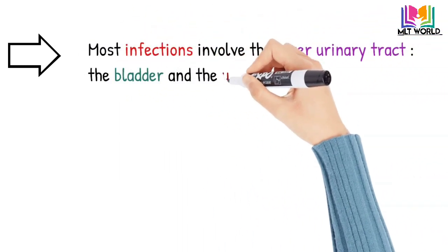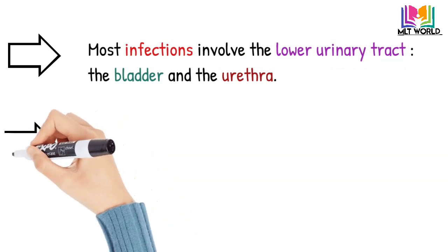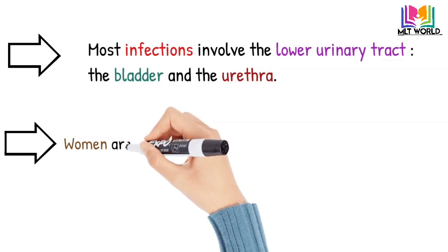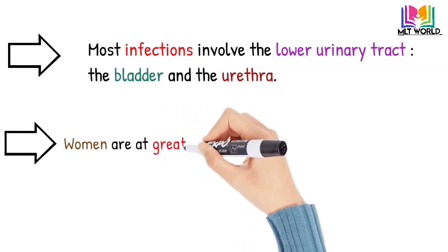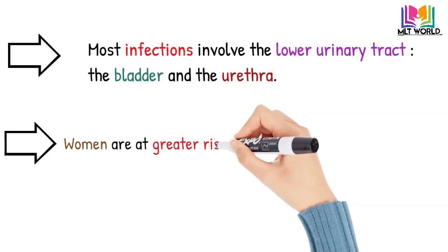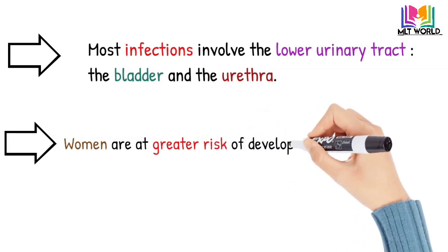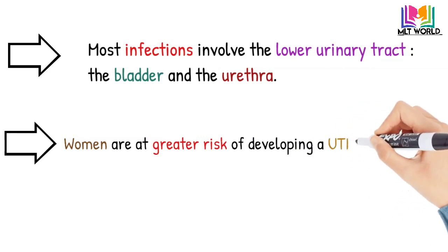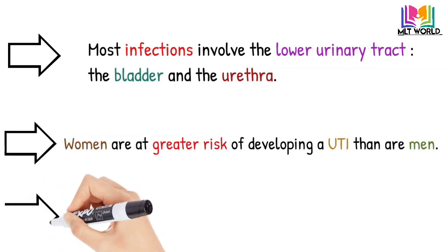Women are more likely to develop urinary tract infections — women are at greater risk because of female anatomy. Women have a shorter urethra than men do, and as a result there is less distance for bacteria to travel to reach the bladder.